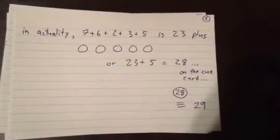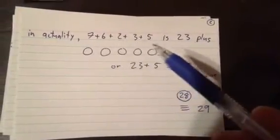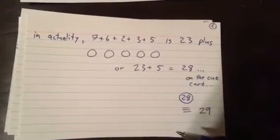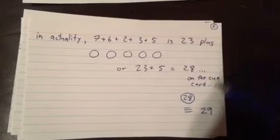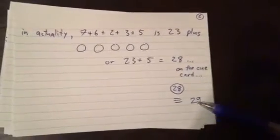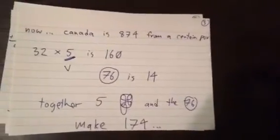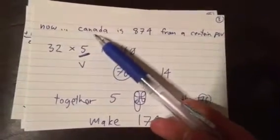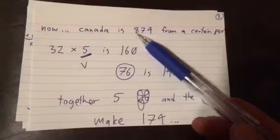Now, in actuality, you're actually going to have 7 plus 6 plus 2 plus 3 plus 5 is 23 plus all the circles that go with them. So there's your 28. But again, it's on the cue card. You have to circle that 28, which is equivalent to a 29. 29 is important. Keep 29 in mind. We're going to put 29 over here. So back to this. Now, Canada, in a different, certain point of view, is 874. I wrote it and said it a different way.